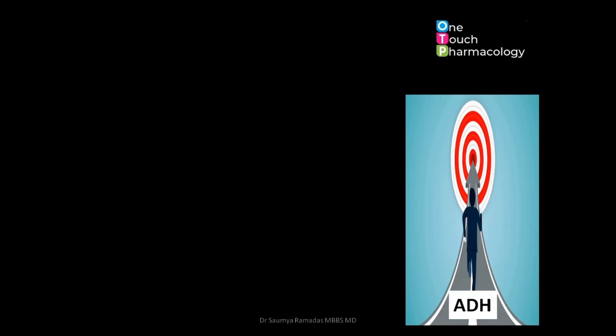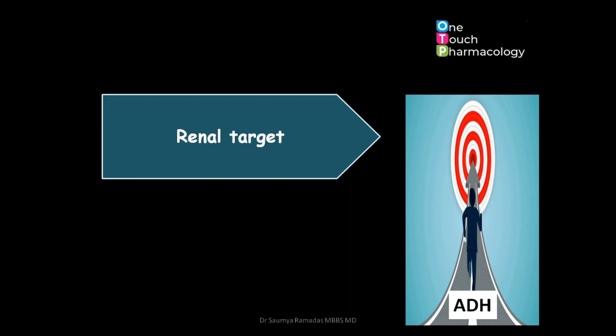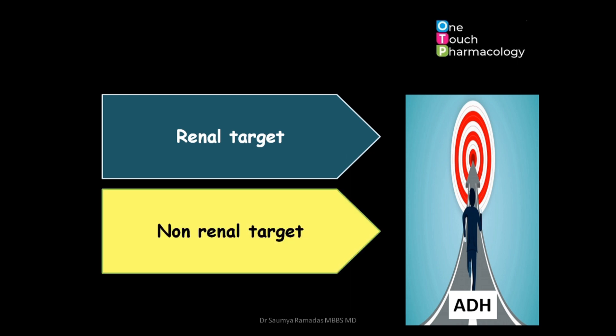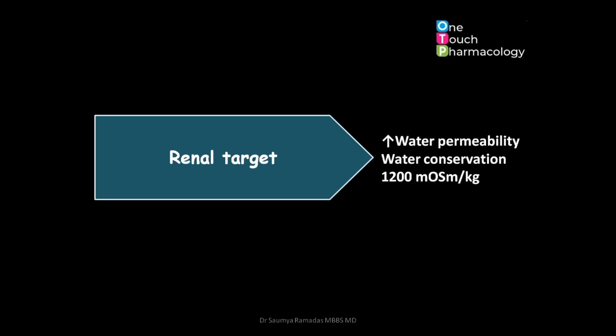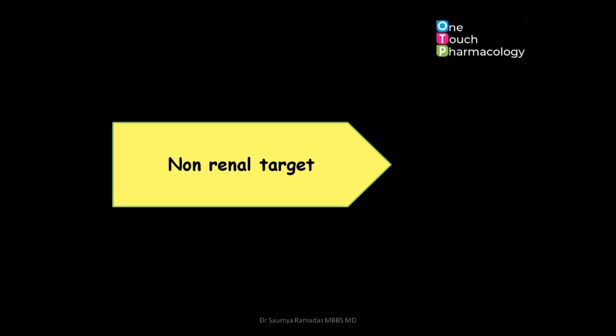Once the antidiuretic hormone is released into the circulation, it acts on certain targets. Primarily it acts on the renal target, and all other targets are grouped as non-renal targets. The primary role of antidiuretic hormone in the kidneys is water conservation — vasopressin increases water permeability of the collecting duct and increases water reabsorption. The urine can be concentrated as high as 1200 milliosmoles per kg. Important non-renal targets include the cardiovascular system, the central nervous system, the uterus, and the liver.